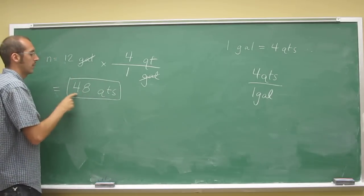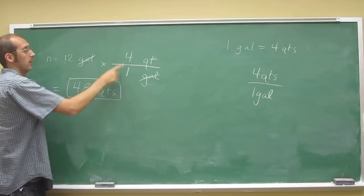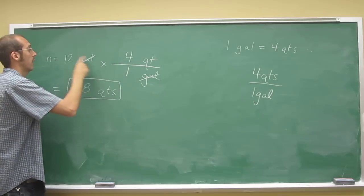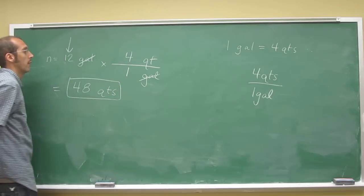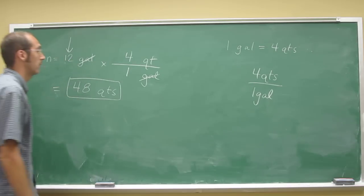And is that the right number of sig figs? Well, it's 2, so do we count these? No, because it's the conversion factor. We only use the number that's given to us in the problem. And that's got 2 sig figs, so that's got 2 sig figs.